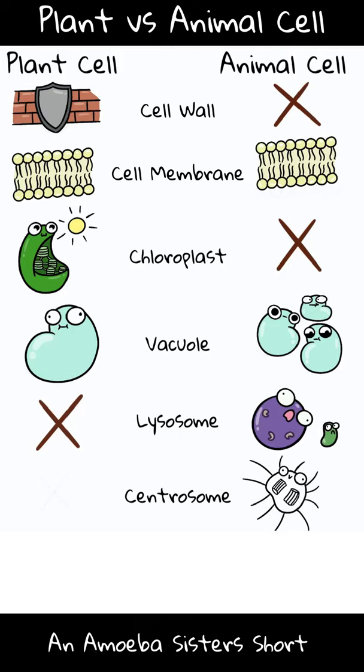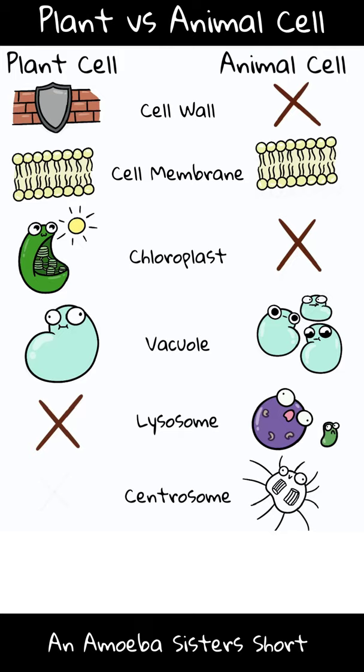Animal cells have centrosomes, which are each made up of centrioles that are involved in cell division. Plant cells, even though they can divide, don't have centrosomes.